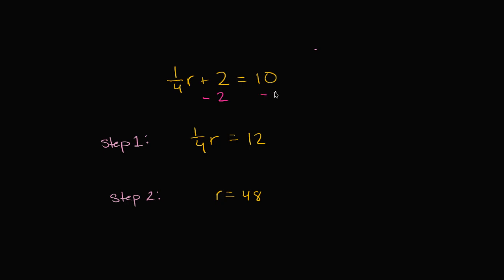But of course, you would also have to do that from the right-hand side. And so you get (1/4)r + 2 - 2. That would just be (1/4)r. So the left-hand side makes sense. 10 - 2 is not 12. 10 - 2 is 8. This right over here should be 8. They subtracted 2 on the left-hand side and added 2 on the right-hand side. Then the equality wouldn't hold anymore. So you definitely have an error. Step 1 is not correct.